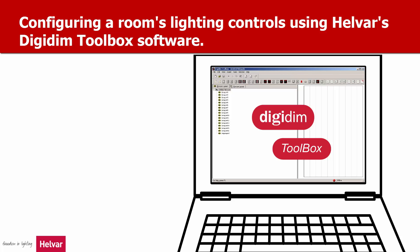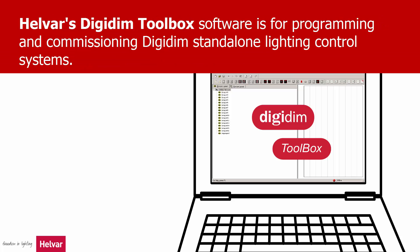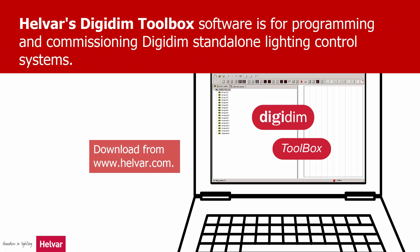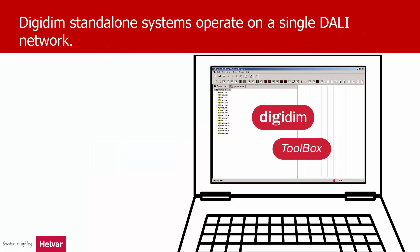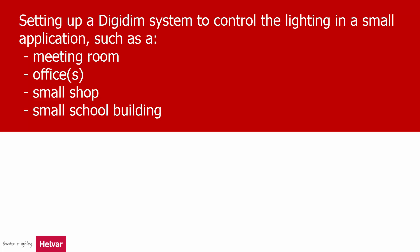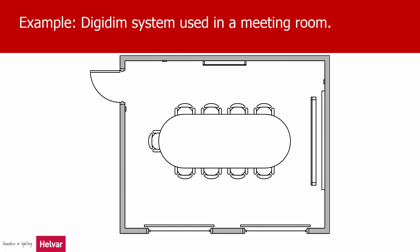Configuring a room's lighting controls using Helvar's Digidim Toolbox software. Helvar's Digidim Toolbox is for programming and commissioning Digidim standalone lighting control systems, which operate on a single DALI network. What we're going to demonstrate is how to set up a Helvar Digidim system to allow sophisticated control of lighting in rooms such as a meeting room, a small office suite, a shop, or a small school building. The example we're going to use is a small meeting room.